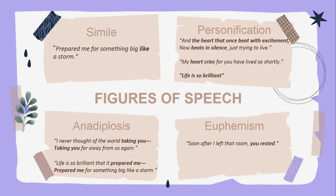Now we have the figures of speech used in the poem. We have simile, personification, anadiplosis, and euphemism. For simile, the line 'Prepared me for something big like a storm' contains a comparison using the word 'like,' so that is clearly a simile. For personification, 'And the heart that once beat with excitement, now beats in silence, just trying to live' — the heart is an organ and it is associated with the human attributes of excitement and silence, making it personification.